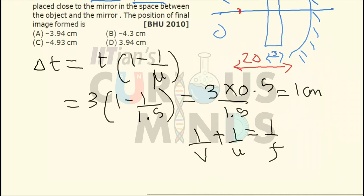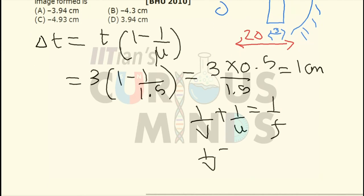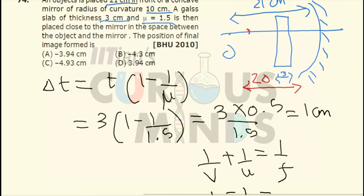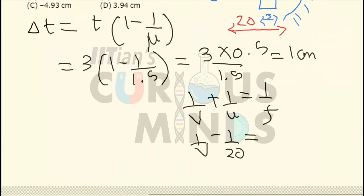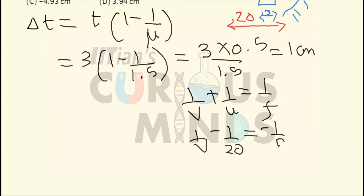Final position of the image is unknown. The position of the object is equal to -20. It is situated at -20. Focal length over here, the radius of curvature is 10 cm. So the focal length will be equal to 5 cm. Since it is concave mirror it will be -5.